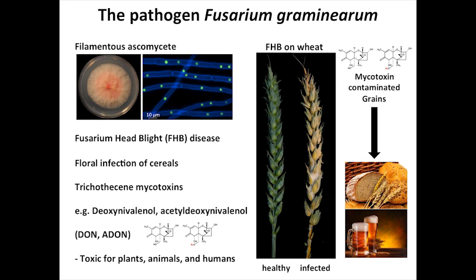The grains from infected plants are contaminated with trichothecene mycotoxins, such as deoxynivalenol and the acetylated derivative acetyl-deoxynivalenol, short called DON and ADON. These sesquiterpene compounds are known to be harmful to humans, animals, and plants by binding to the eukaryotic ribosomal large subunit, thereby inhibiting protein biosynthesis. Acute toxic effects for humans from contaminated products such as bread, beer, or crackers include food refusal, vomiting, and diarrhea. In Europe and the United States, there are minimum detection limits for these toxins in all products meant for human consumption.